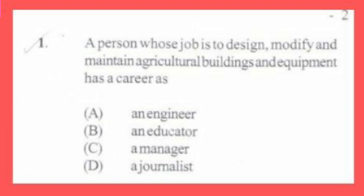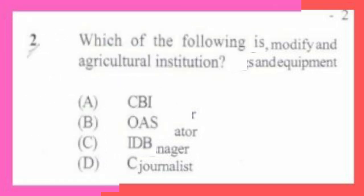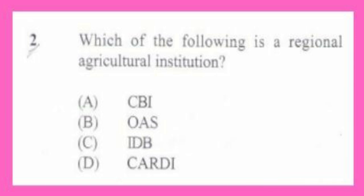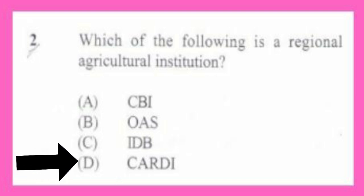Question number 2. Which of the following is a regional agricultural institution? A. CBI, B. OAS, C. IDB, D. CARDI. The answer is D, CARDI. CARDI stands for Caribbean Agricultural Research and Development Institute. Of course, regional basically speaks about the Caribbean.